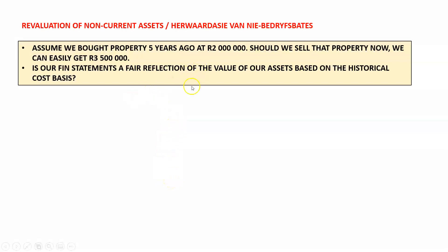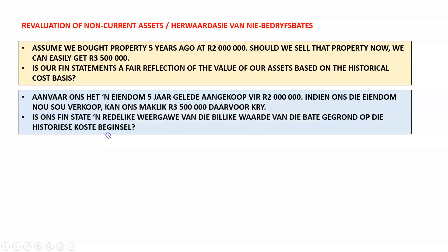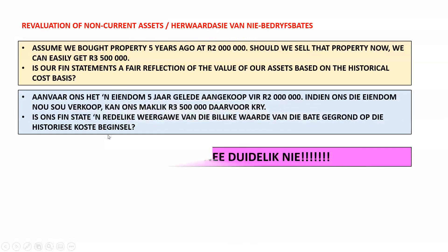Obviously not, because we apply the historical cost basis — that is the amount that we've paid. So we've paid 2 million rand for that property; however, the value of that property is now 3.5 million rand.